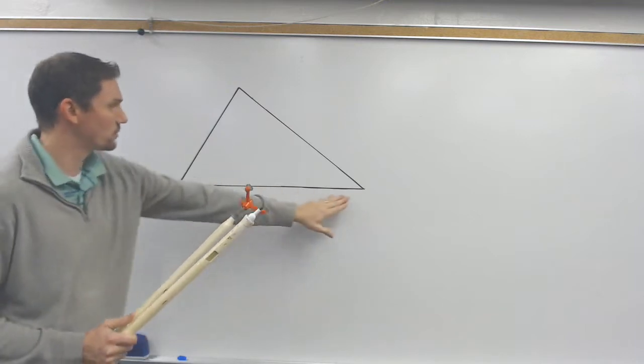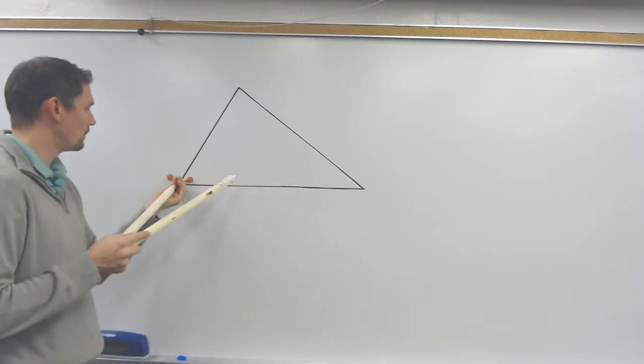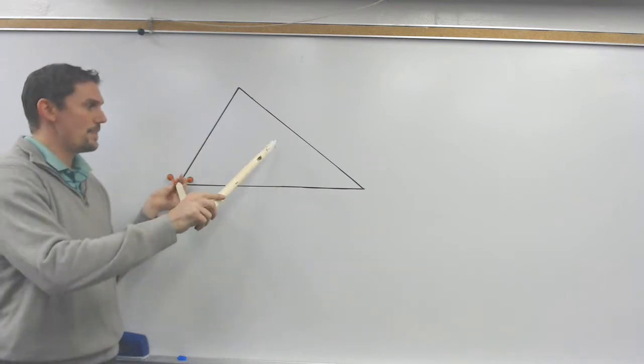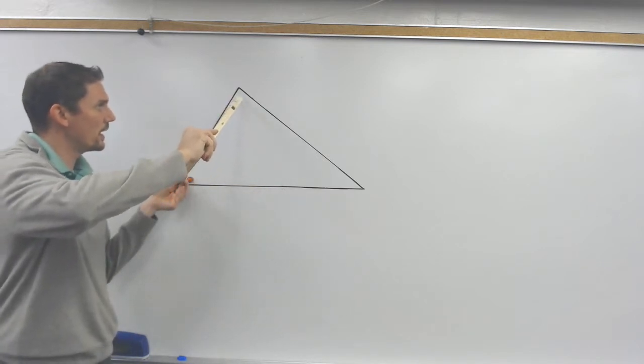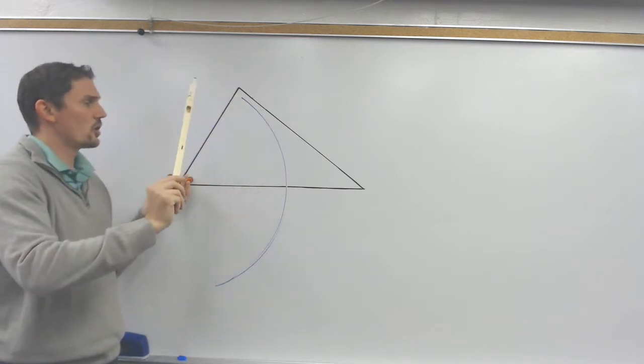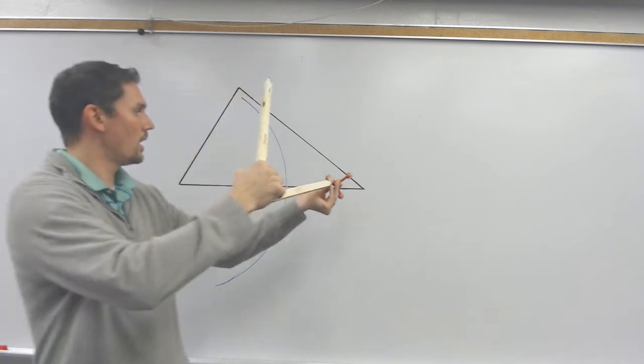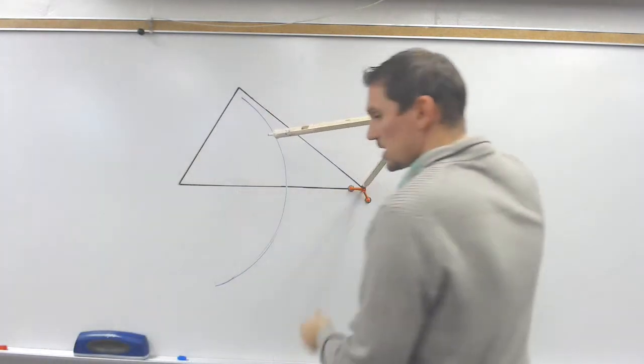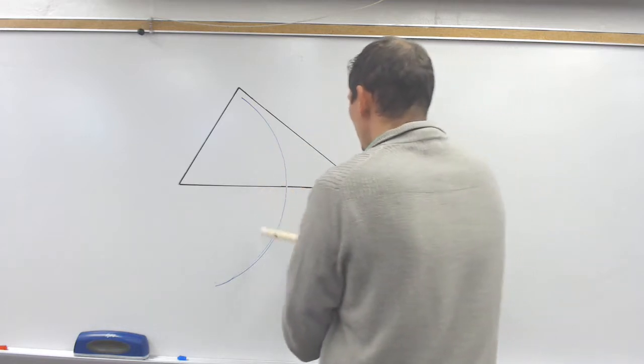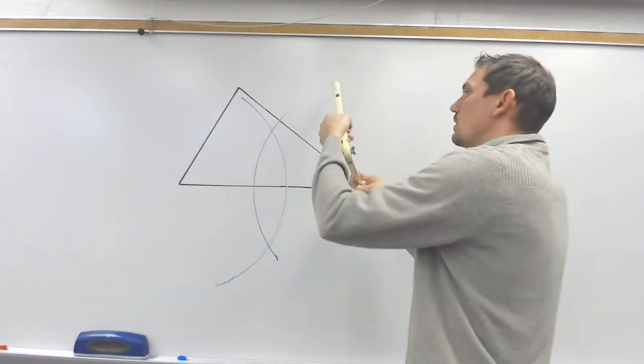So I'm going to do the first one down here. I'm going to put my pointy part on the corner, and then I'm going to take the compass and go a little bit more than halfway to draw my first arc. And then I'm going to take the pointy part up and go to the other side without changing the width to do the arc on the other side.